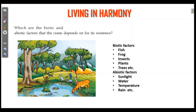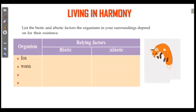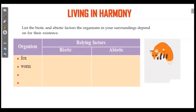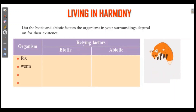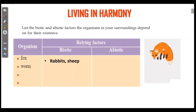If you have any questions, we have a table — a list of four of them — and we are classifying their biotic and abiotic factors. In the park example, we have squirrels, birds, butterflies; what are biotic? Rabbit, sheep are biotic. We also have water.